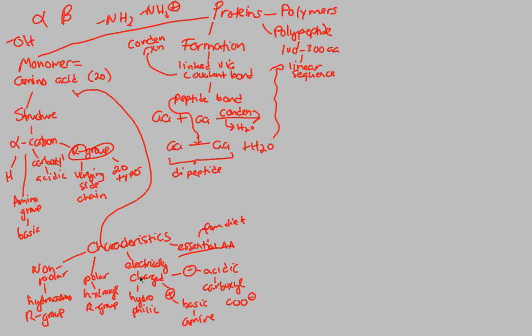Amino acids have this structure, these characteristics, dependent on what? The R group. So the R groups are going to be very important, especially when we start building actual proteins.